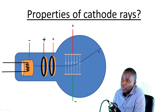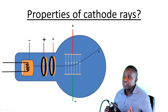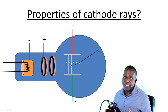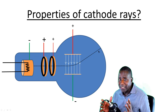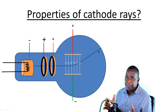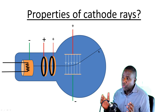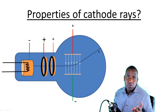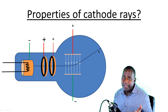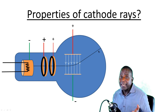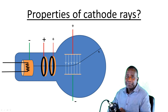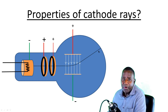We'll take a break here before looking at the next property — the fact that cathode rays are deflected by a magnetic field. In this section we have looked at the fact that they travel in straight lines and are deflected by an electric field. See you in a moment.